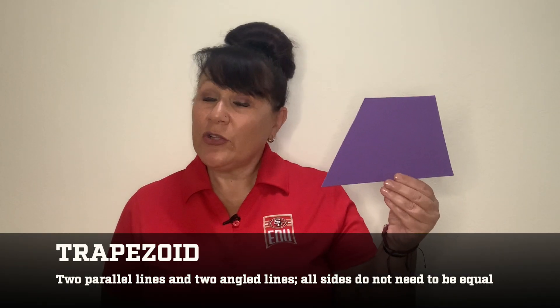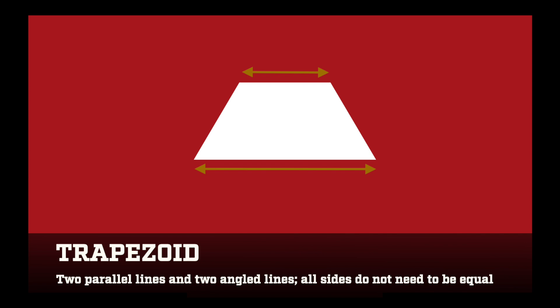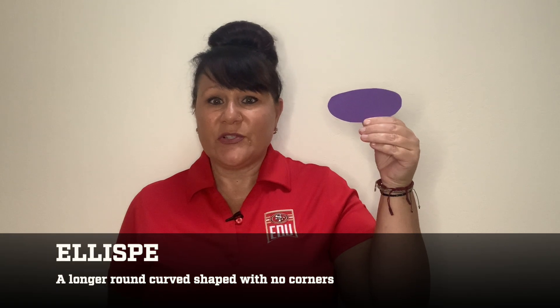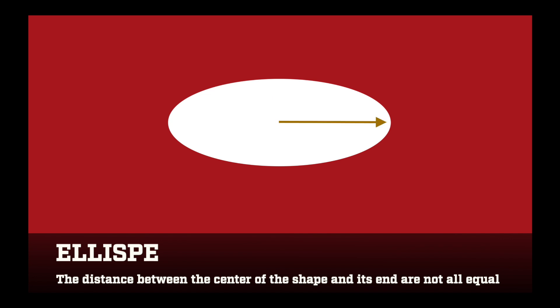The next shape I want to introduce is a trapezoid. A trapezoid can look very differently. A trapezoid has two parallel lines and two angled lines. All sides do not need to be equal. Parallel lines are two lines that do not meet. Another shape is called an ellipse. An ellipse looks like a circle that's been stretched and we commonly call it an oval. The distance between the center of the shape and its end are not all equal. You may have one more shape in mind that looks very similar to an ellipse. You may see it in every game that we play. It's called a football. But a football has an actual name to the shape that it is and that is called a prolate spheroid.